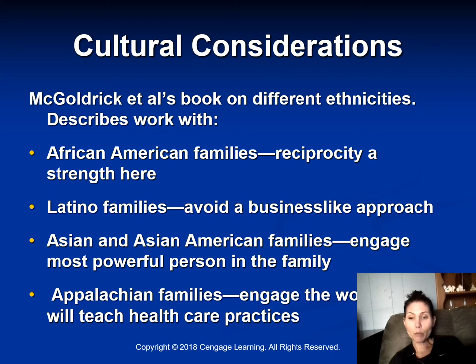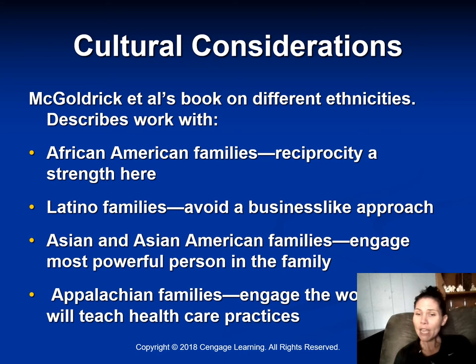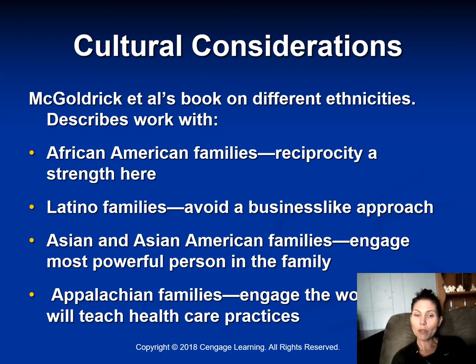Cultural considerations are very important — always take a client's cultural background into consideration. McGoldrick's work identified different approaches for different cultures and populations. For African American families, reciprocity is a key strength. With Latino families, avoid a business-like approach. With Asian and Asian American families, engage with the most powerful person in the family. With Appalachian families, engage with the primary woman, who helps teach health care practices. This is relevant even in Ohio — southern and eastern Ohio have many Appalachian families.